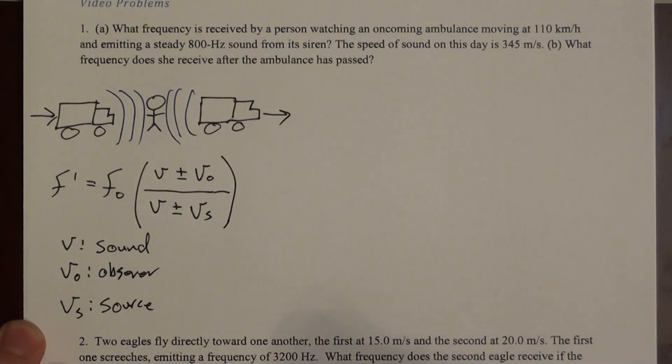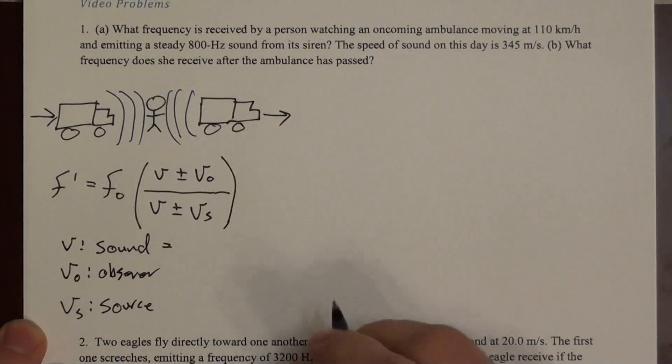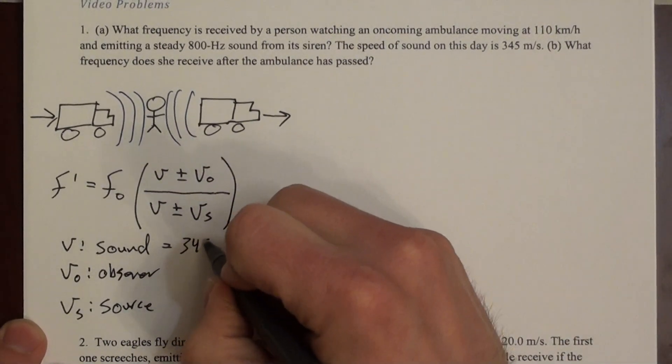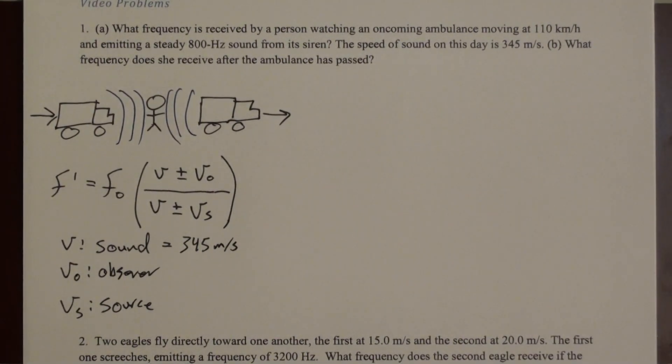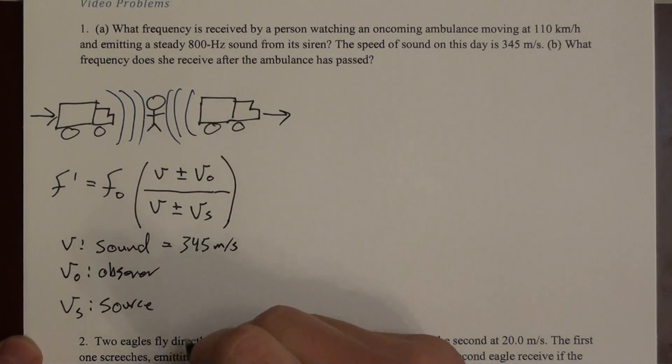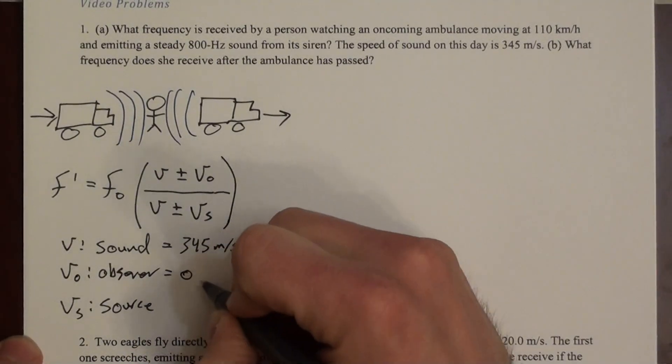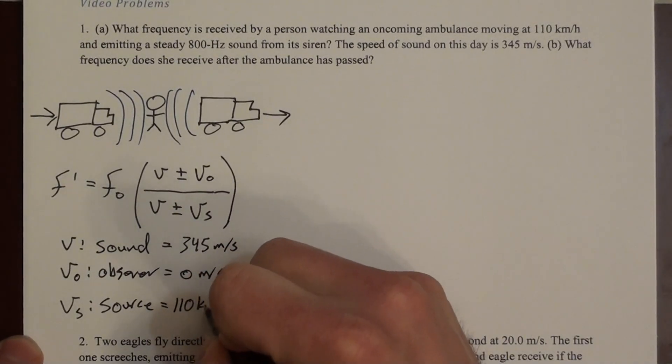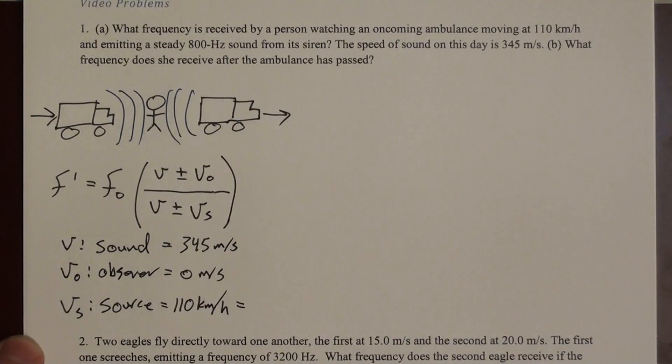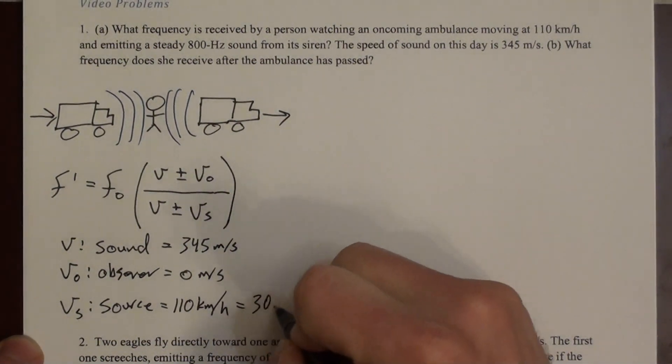In this problem we are given some of these values. The speed of sound, we're told it's 345 meters per second, and that can change day to day because it depends on the makeup of the air, which is pretty uniform, but it also depends on the temperature, and the temperature definitely changes day to day or hour by hour. The speed of the observer is 0 meters per second. He's not moving. And the source is 110 kilometers per hour. So we can put that in SI units. If you multiply by 1000, that changes to meters, and divide by 3600, that changes to seconds. And what you get is 30.6 meters per second.